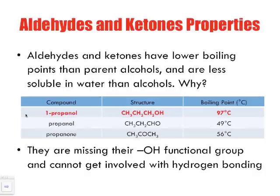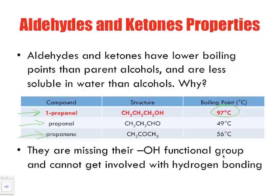Let's look at some properties of aldehydes and ketones. Aldehydes and ketones have a lower boiling point than their parent alcohol. Here we have the propane derivative: 1-propanol (the alcohol), propanal (the aldehyde), and propanone (the ketone). The boiling point is higher for the alcohol than for aldehydes and ketones. The reason is they are missing the OH functional group. Propanol has this OH ending, which is where hydrogen bonds are actually going to form when mixing with other compounds, as you'll see in a future lesson.